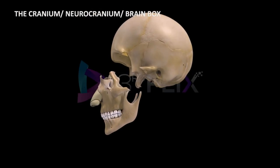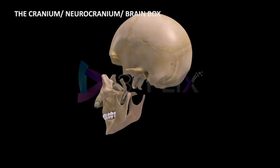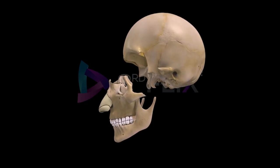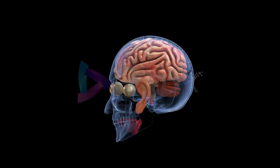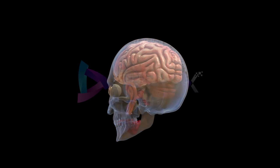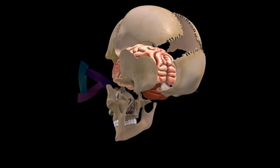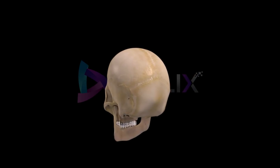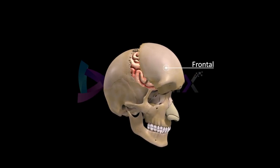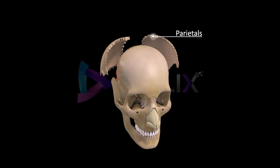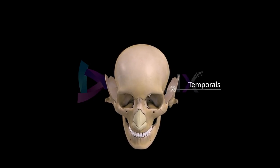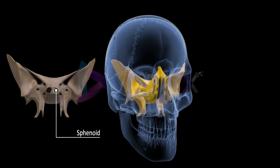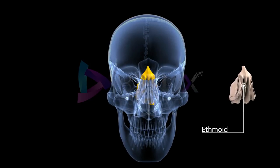The cranium, or neurocranium, or brain box. The neurocranium lodges and protects the brain and sense organs. It is formed by eight flattened cranial bones that form the hard, protective covering for the brain. These include a frontal, a pair of parietals, a pair of temporals, an occipital, a sphenoid, and an ethmoid.